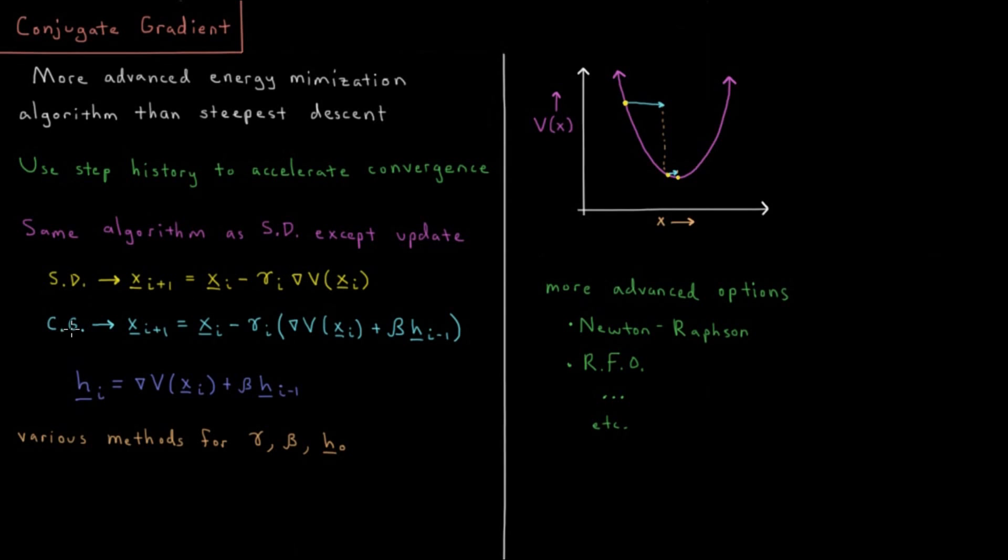In conjugate gradient, instead, we step in the direction not only of the gradient, but some additional step which indicates the history of all the previous steps that we've had. This value H here is another vector, just as our gradient is a vector, a direction to move in.